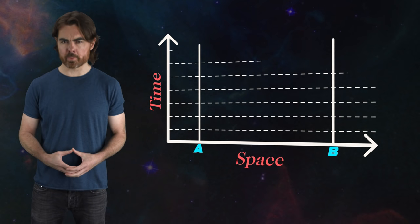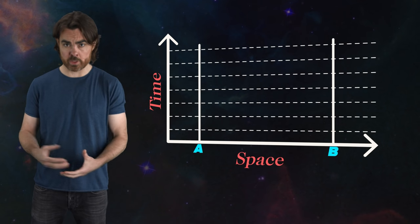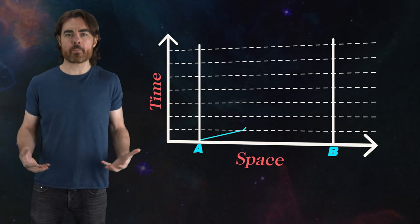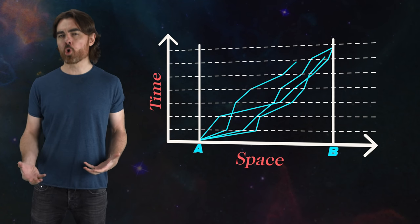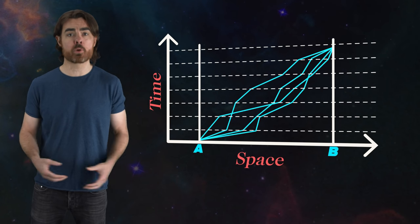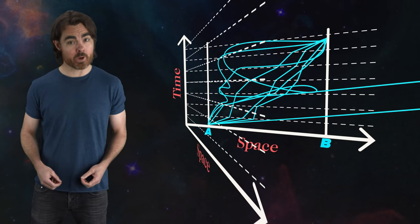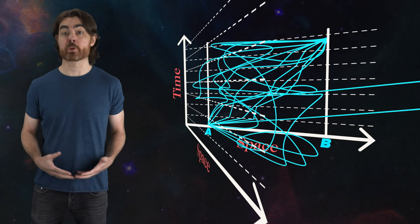Feynman's path integral shows us that to properly calculate the probability of a particle traveling between two points, we need to add up the contributions from all conceivable paths between those points, including the impossible paths. In fact, we can go even further.